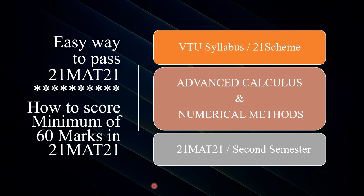In this session, I am going to discuss VTU syllabus of 21 scheme for the second semester. The subject name is Advanced Calculus and Numerical Methods, subject code 21MAT21. I am going to discuss the easy way to pass this subject and how to score a minimum of 60 marks in 21MAT21.